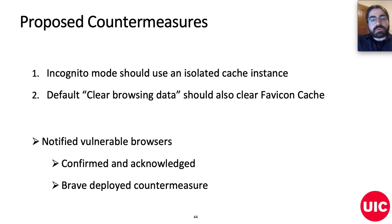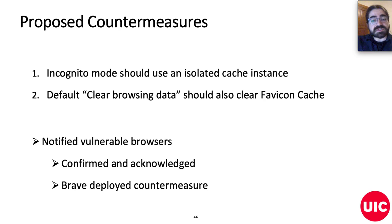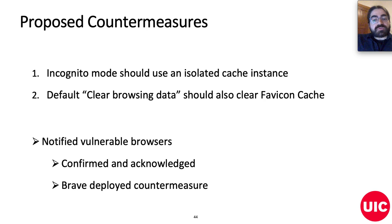As we have shown, due to the browser functionality leveraged by our attack, there is no primary defense that can prevent it without affecting the user's browsing experience. A potential solution that introduces no overhead could be incognito mode's isolation from accessing the cache, creating separate instances for every private session — similar to the Tor browser. Another straightforward solution is to erase the favicon cache whenever the user deletes cookies or browsing history. Since the implications of our attack are critical, we notified the vulnerable browsers. Brave has already deployed a countermeasure for the favicon attack, while others are still working on potential mitigations and redesign of the functionality.